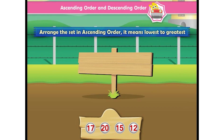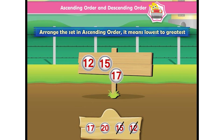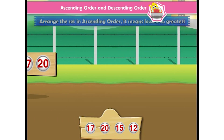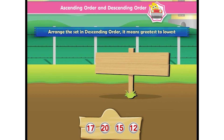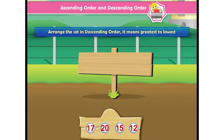When we arrange the set in ascending order — from lowest to greatest — it is 12, 15, 17, 20. Similarly, when we arrange the set in descending order — from greatest to lowest — it is 20, 17, 15, 12.